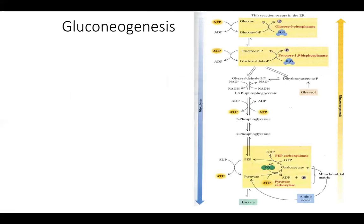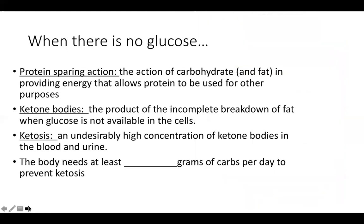Gluconeogenesis is the process by which the body makes glucose from non-carbohydrate sources in the absence of glucose or carbohydrate intake — from certain amino acids and components of triglycerides such as the glycerol backbone. The body prefers not to break down protein because protein has so many important roles — immunity, enzymes, antibodies, blood pressure, cell production — and we don't have excess protein stores other than muscle. Instead, the body breaks down fat to use as energy.